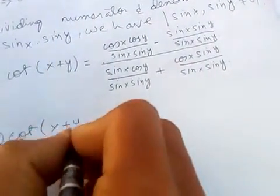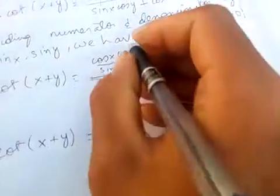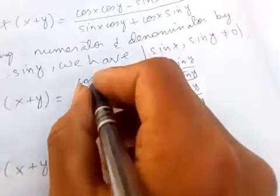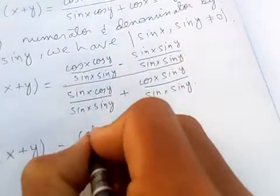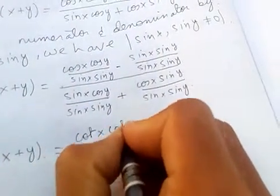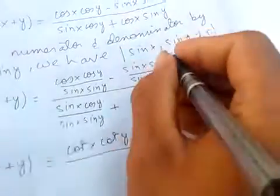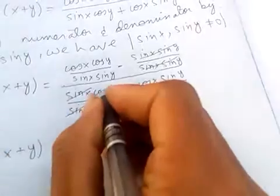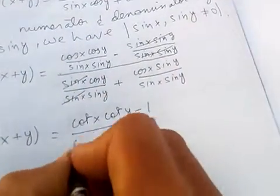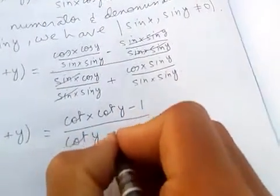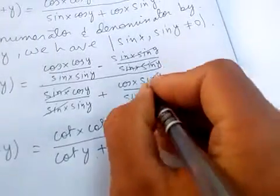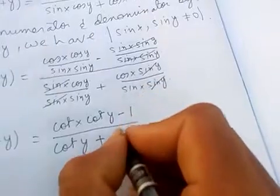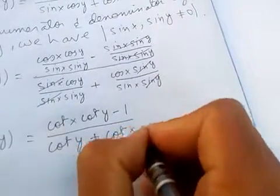So let's cancel. This cannot be cancelled, so cos over sin is cot, we know cot x cot y. Minus this all cancels to just one. And this, we know cos by sin is cot y, plus this one sin y and sin y cancel, so cos x by sin x is cot x.